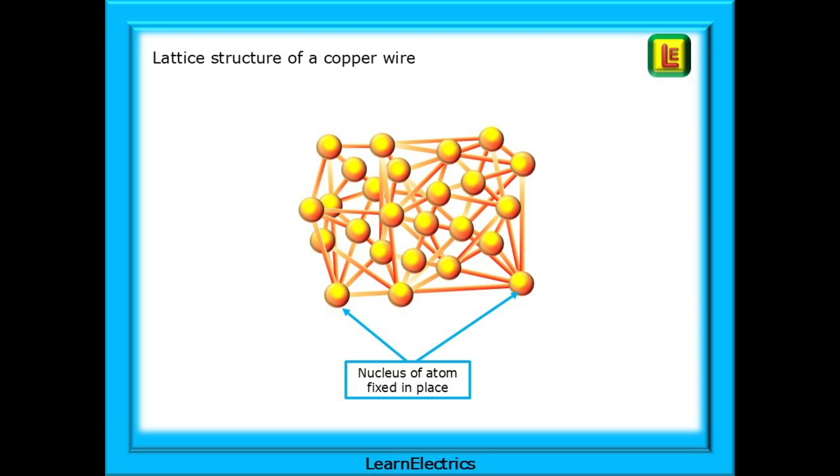Under magnification, the lattice-like structure of the atom can be seen. The nucleus, the protons and neutrons of the atom are fixed in place, part of the lattice, and the electrons move around this framework.